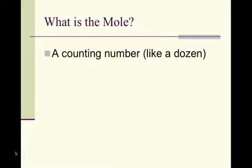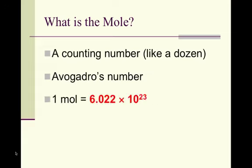So what is the mole? The mole is a counting number, kind of like a dozen. You know there are 12 things in a dozen, like 12 donuts in a dozen. A mole is kind of like that. It's just a counting number. The number that we use is Avogadro's number. And Avogadro's number is 6.02 times 10 to the 23rd. So it's a really big number. So one mole of things is equal to 6.022 times 10 to the 23rd things.